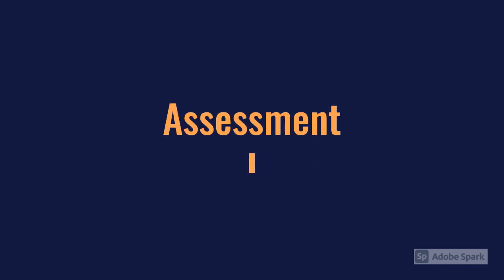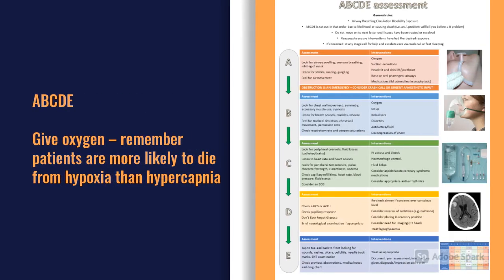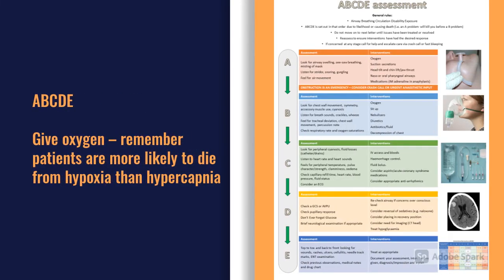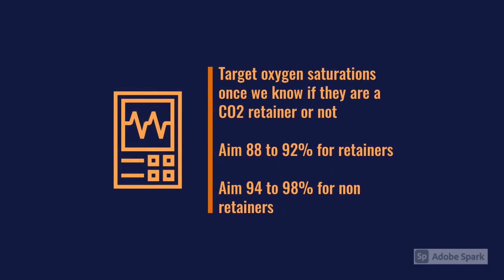When assessing these patients we adopt an ABCDE approach. We've already talked about oxygen — when you see these patients acutely, put them on at least some oxygen; sticking them on a non-rebreather for five to ten minutes isn't going to cause too much harm. Patients are more likely to die from hypoxia than hypercapnia. Once we've worked out whether they're a CO2 retainer or not, we target oxygen saturations: 88 to 92% if they are a CO2 retainer, or 94 to 98% if they're not.